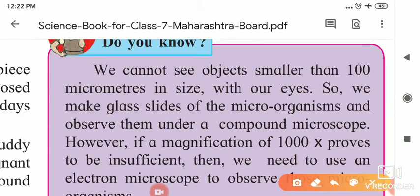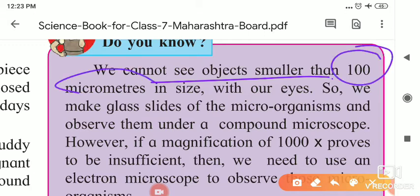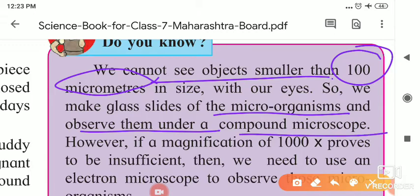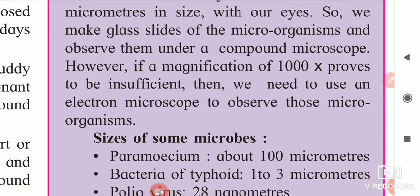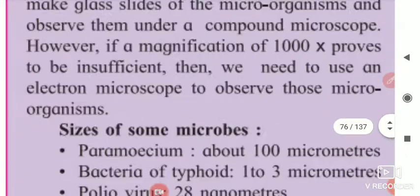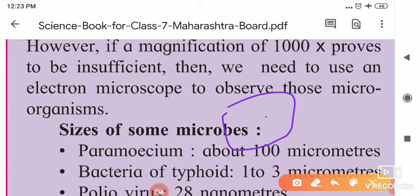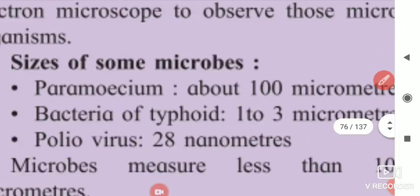The next point is the 'Do you know' section. We cannot see objects smaller than 100 micrometers in size with our eyes. We make glass slides of microorganisms and observe under the compound microscope. However, if a magnification of 1000x proves to be insufficient, then we need to use an electron microscope to observe those microorganisms. We can observe the cell under the compound microscope, but to see cell organelles you have to use the electron microscope.